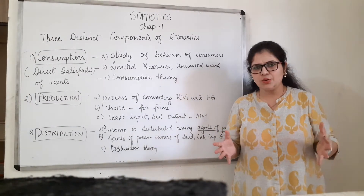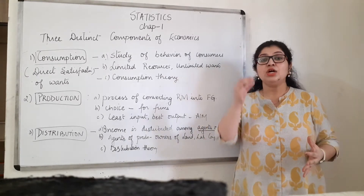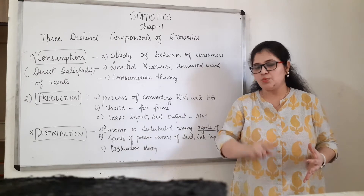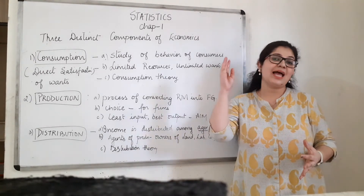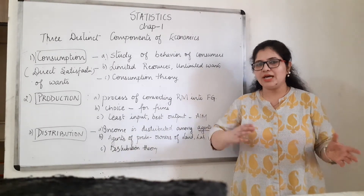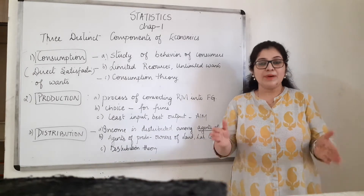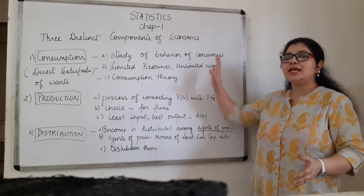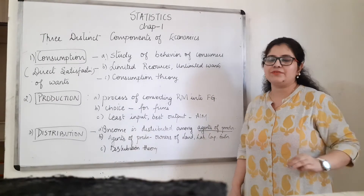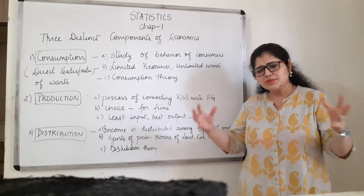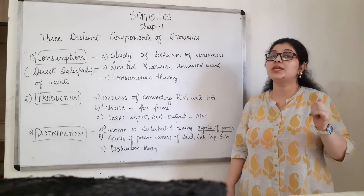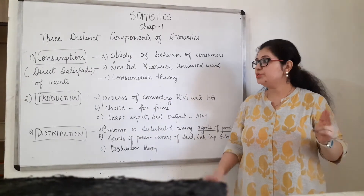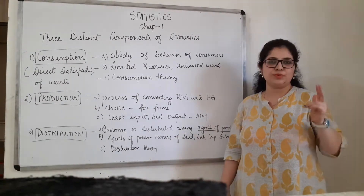When we study economics, we study these four pillars in detail — consumer, producer, government, and rest of the world — over two years. We study three basic activities: one, consumption; two, production; and three, distribution.